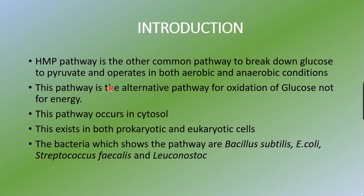The HMP pathway is another common pathway to break down glucose to pyruvate, and it can operate in both aerobic and anaerobic conditions. This is an important point to remember. It is considered an alternate pathway for oxidation of glucose — but not primarily for energy. That means we are not going to get ATP from this HMP pathway; it is oxidizing glucose to produce other substrates, but not energy.